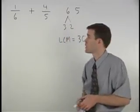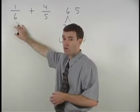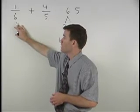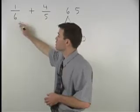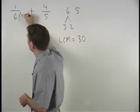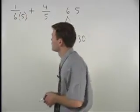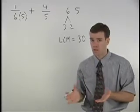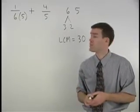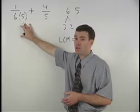In order to get a denominator of thirty in the first fraction, we must multiply our denominator of six by five. The problem is we can't just multiply the denominator of a fraction by five because that changes its value.